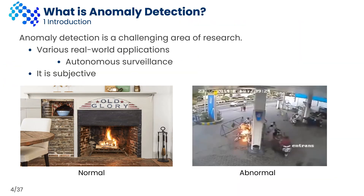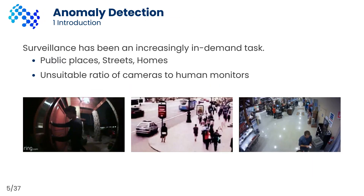An anomalous event is a critical and challenging problem mainly because of its various real-world applications such as autonomous surveillance, and because it is extremely subjective. An anomalous event is an event that deviates from normal behavior and may occur occasionally in such videos. Video surveillance generates massive amounts of data, making it crucial to detect anomalous events such as shooting, road accidents, fighting, etc. Hence, video anomaly detection is a critical problem especially in surveillance applications, which generates an unstable ratio of cameras to human monitors.